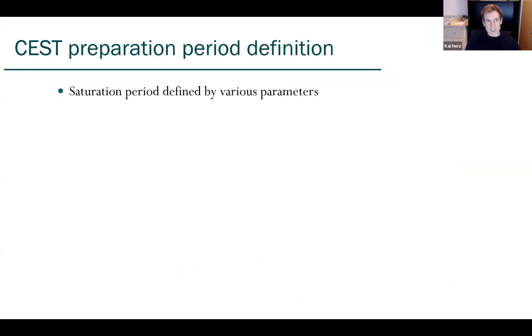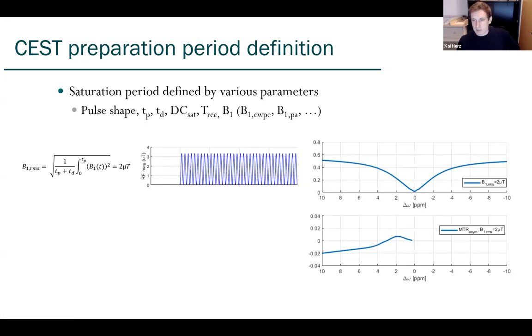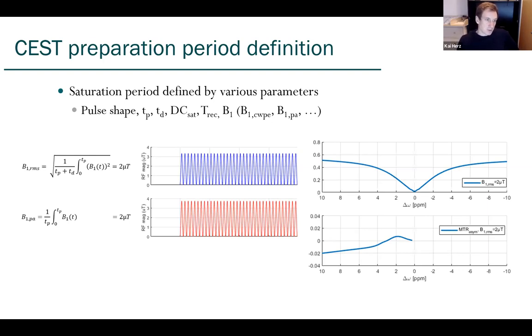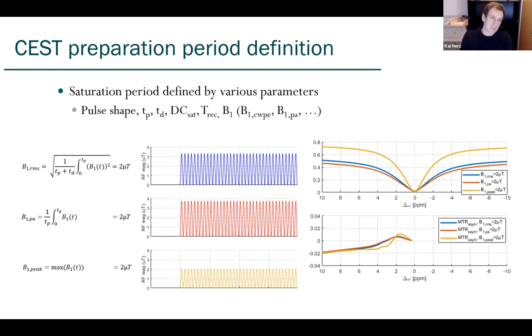As you can see, the CEST preparation period is actually defined by various parameters - the pulse shape, pulse duration, and power. I wanted to show you a quick example. Imagine you read a paper and someone says they used B1 of two microtesla. What did they actually do? A good definition is the B1 root mean square over the pulse train. If this was two microtesla, we simulate that and get a CEST spectrum that looks like that. Another valid definition is two microtesla as the mean pulse amplitude, basically a flip angle based definition. When we do that, the power is slightly different and we get a different CEST spectrum. Another definition would be the peak power. The CEST spectrum will look again different.